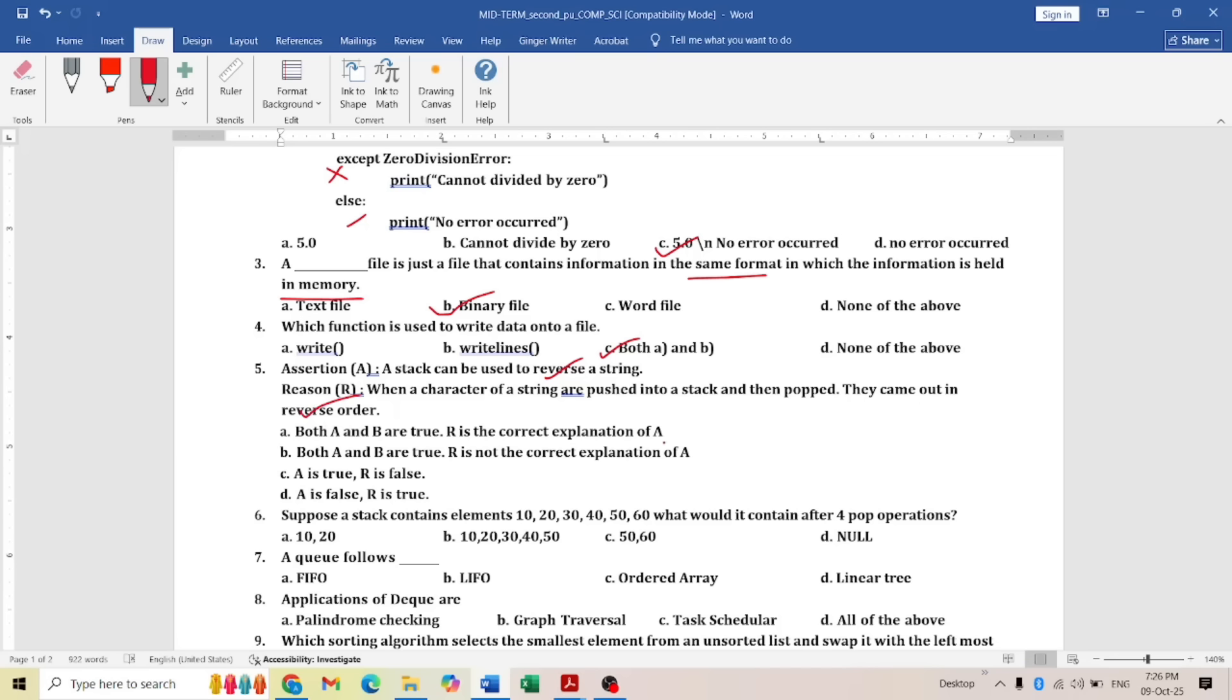The next question: suppose a stack contains elements 10, 20, 30, 40, 50, 60. What will it contain after 4 pop operations? Four operations mean the last will go: 60 will go, 50 will go, 40 will also go, 30 will also go. Then 10 and 20 is the answer. So 10 and 20.